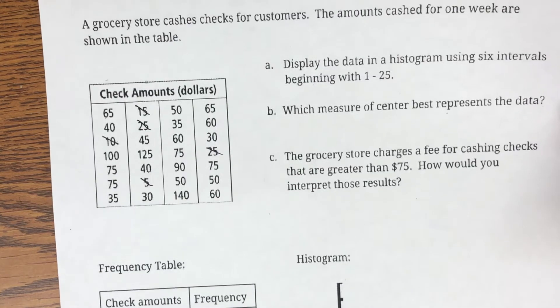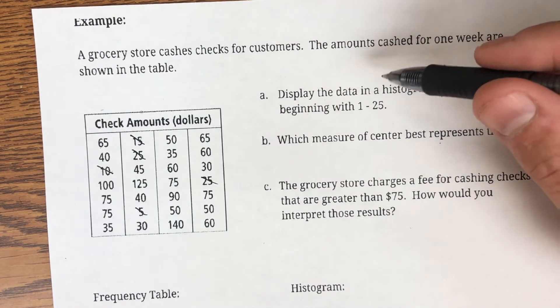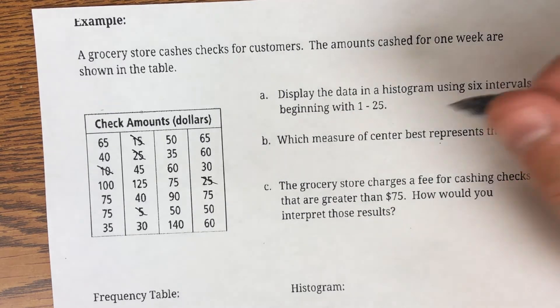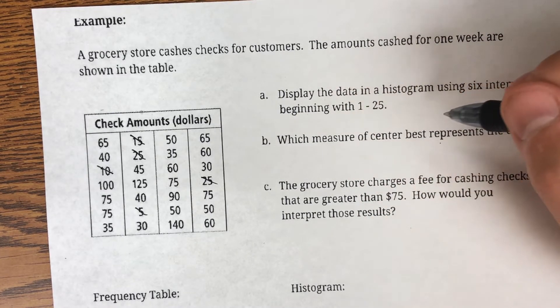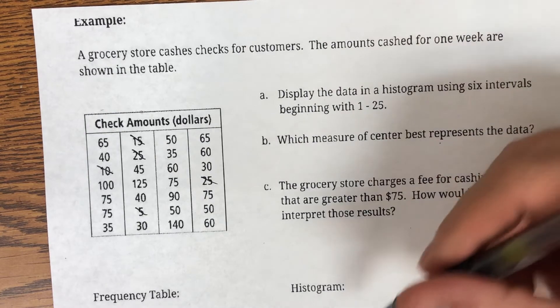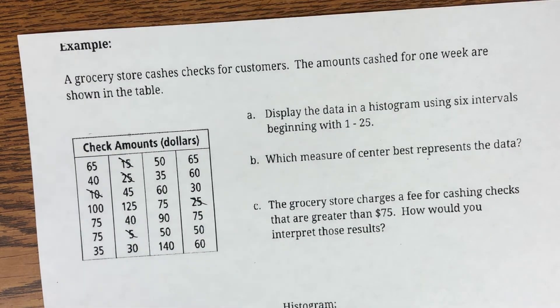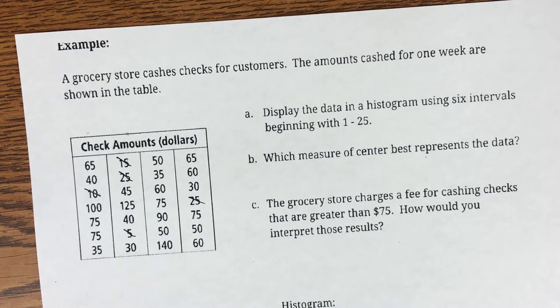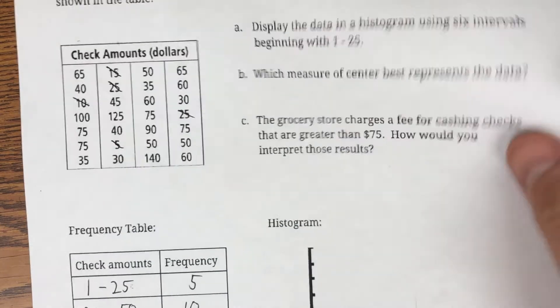So, I kind of did that ahead of time just because it would take a little bit of time for me to do it. And now we're going to answer the questions. So, it says display the data using six intervals between $1 and $25, which we've already taken care of. And then, which measure of center best represents the data? For us to do that, first we need to plot our histogram. So, my frequency, the highest value is 10.